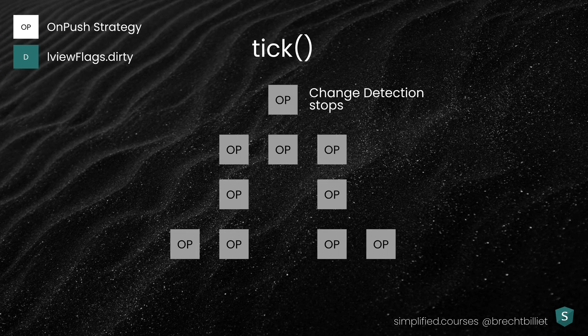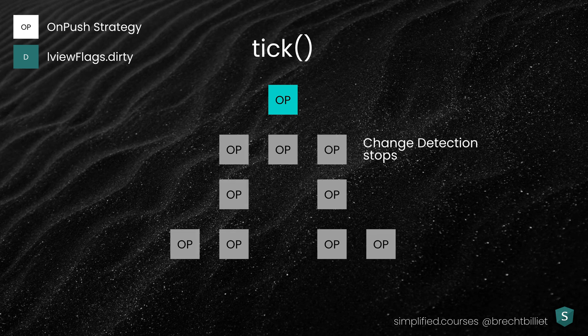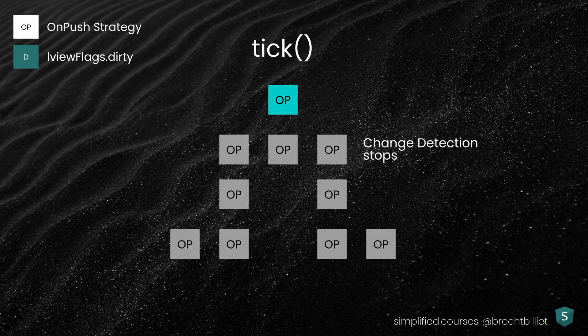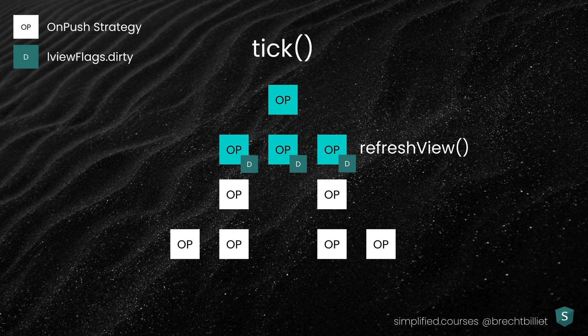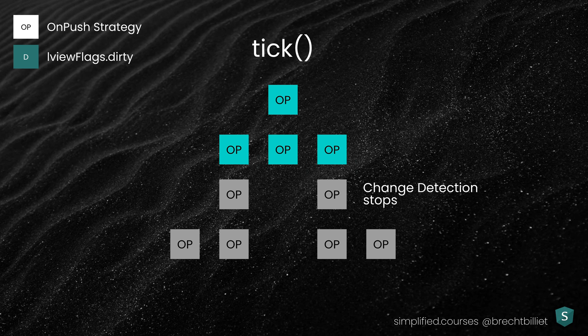When all views are using the onPush strategy and we trigger Change Detection, nothing will happen. If only the top view is marked as dirty, Change Detection will run the refresh view method on that view but stop for the rest. When multiple views are marked as dirty, Change Detection runs from top to bottom, calling refresh view on dirty views and stopping where children are not marked dirty.